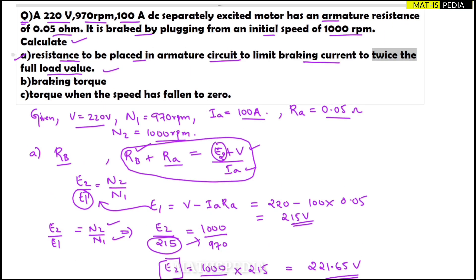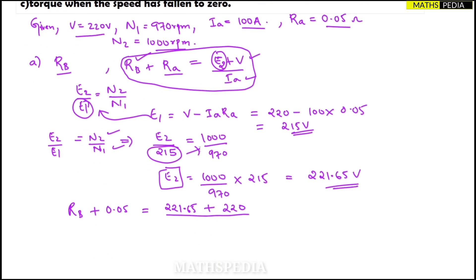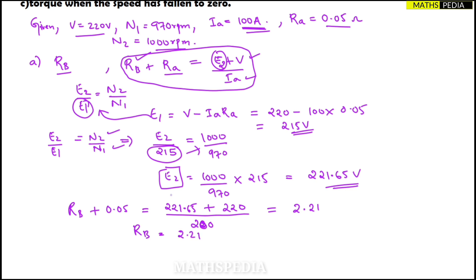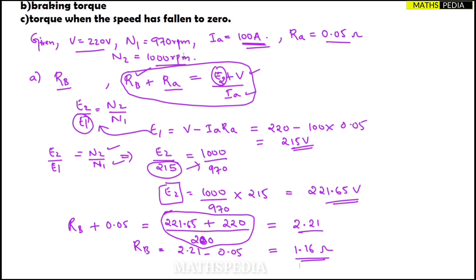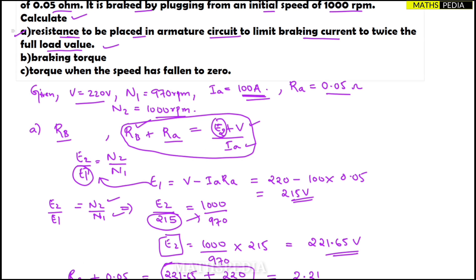Since the question says twice the full load value, Ia = 100 × 2 = 200 ampere. So Rb + 0.05 = (221.65 + 220) / 200 = 2.21 ohm. Therefore Rb = 2.21 − 0.05 = 1.16 ohm. This is the external resistance to be added in the armature circuit to limit braking current. Part one is complete.